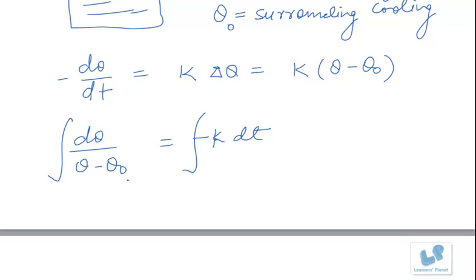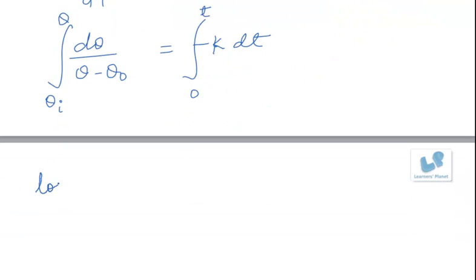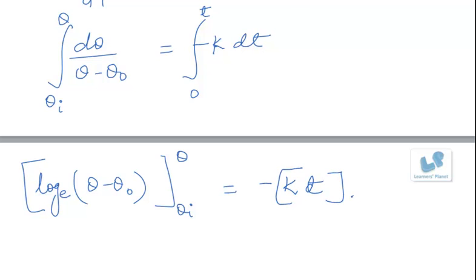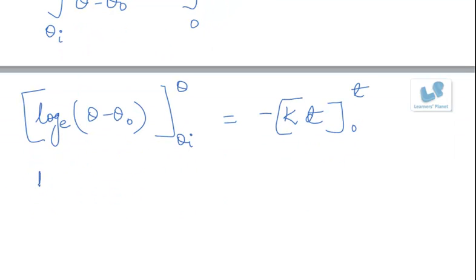And if we integrate it with suitable limits that is from theta i initial temperature of the liquid to the present temperature theta, and time 0 to time t, we will get log to the base e of theta minus theta naught as the integral with limits theta to theta i equal to minus Kt with limits 0 to t. Now if we substitute the values we will get log of theta minus theta naught minus log of theta i minus theta naught equal to minus Kt.